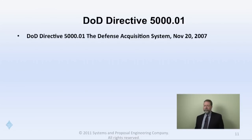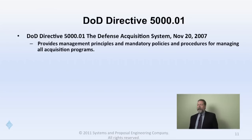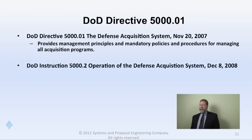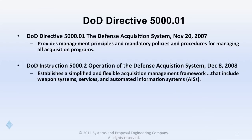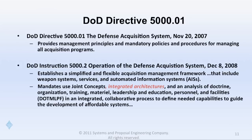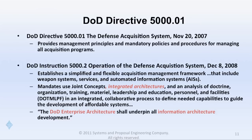DOD Directive 5000.1 describes how we manage the acquisition system itself — its management principles, policies, and requirements. DOD Instruction 5000.2 tells us how to actually implement it. The instruction takes a simplified approach aimed at all weapon systems, information systems, and services. It requires joint concepts and, very significantly, integrated architectures to analyze what is needed in support of JCIDS-defined capabilities. It also specifies that the DOD enterprise architecture shall underpin all information architectures, meaning DODAF is a subset compliant with the DOD enterprise architecture.